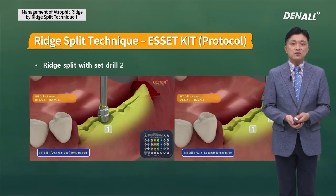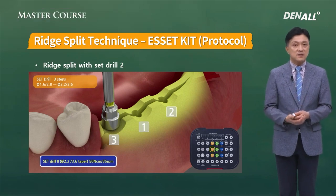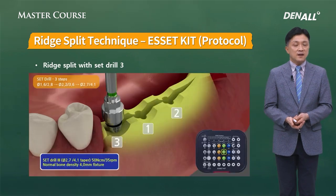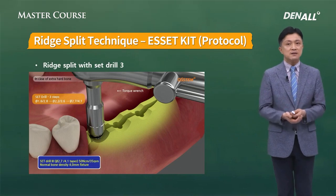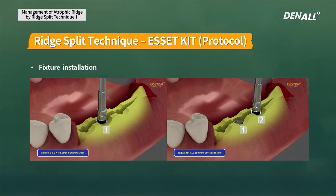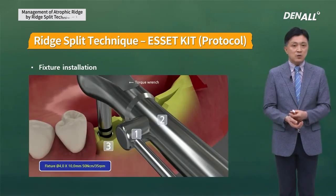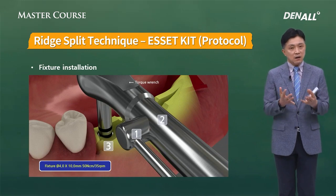Set drill 2 always follows the order: center, distal, then proximal. From set drill 3 onwards, the amount of split and torque increases, so you must approach using your hand. When placing implants, the order is always from center to distal to proximal. When placing two implants, start with distal then proximal. The final placement position should be determined using the hand wrench.